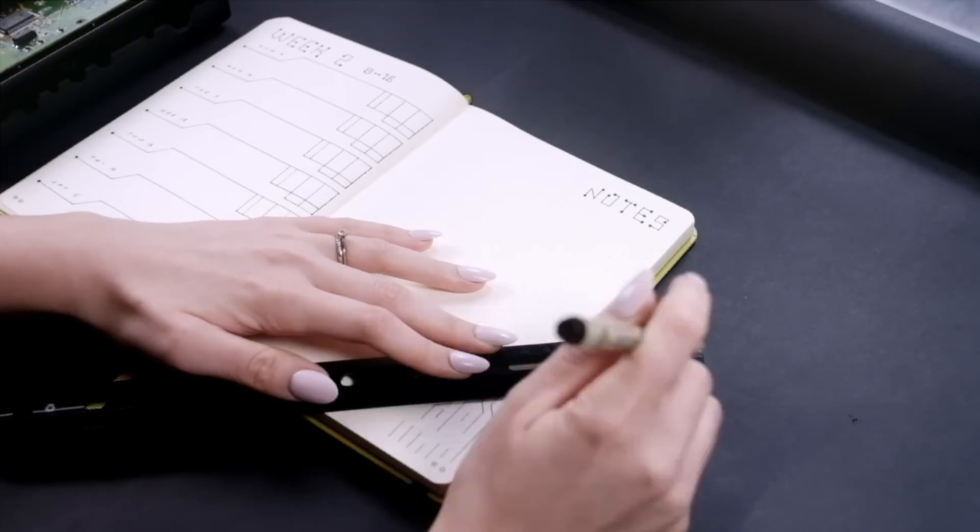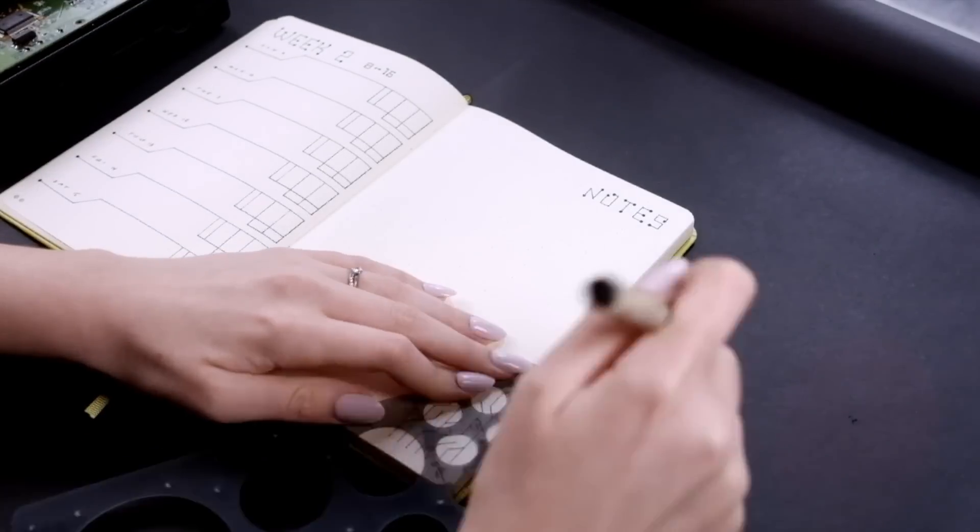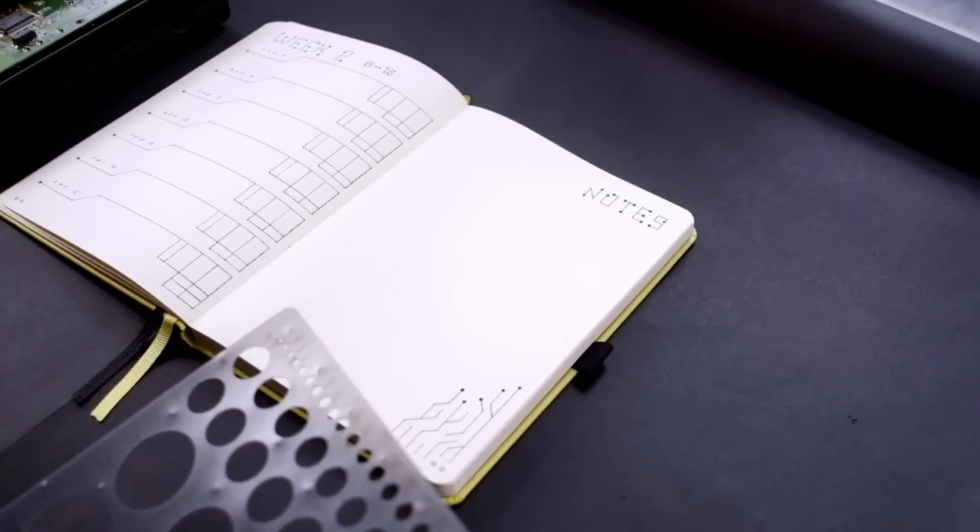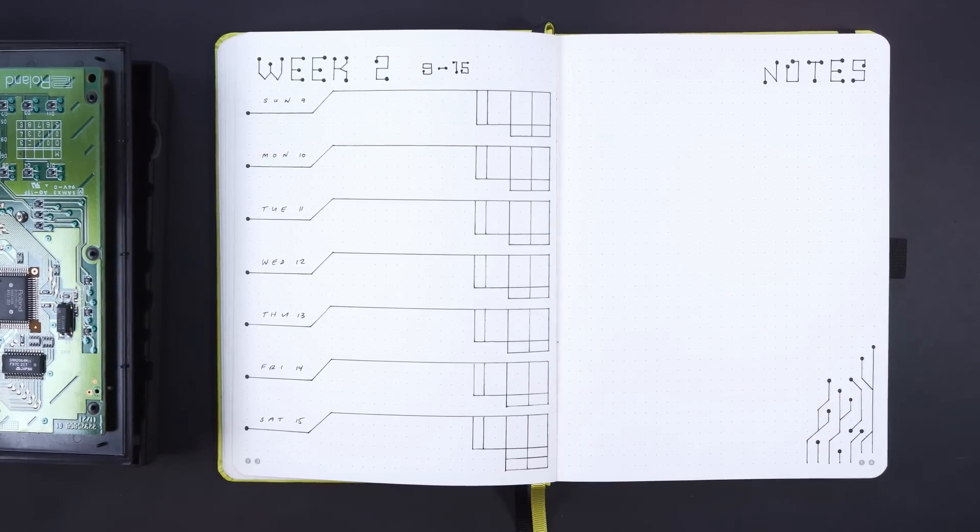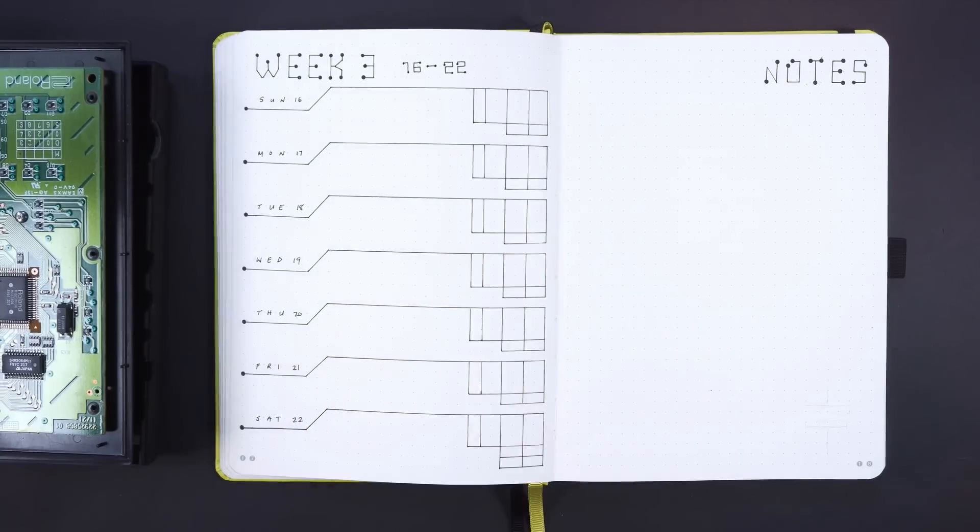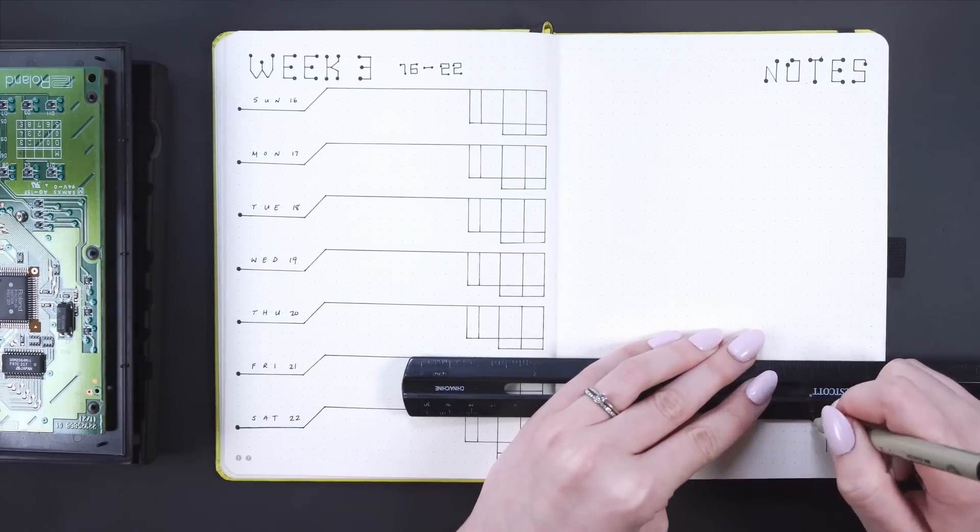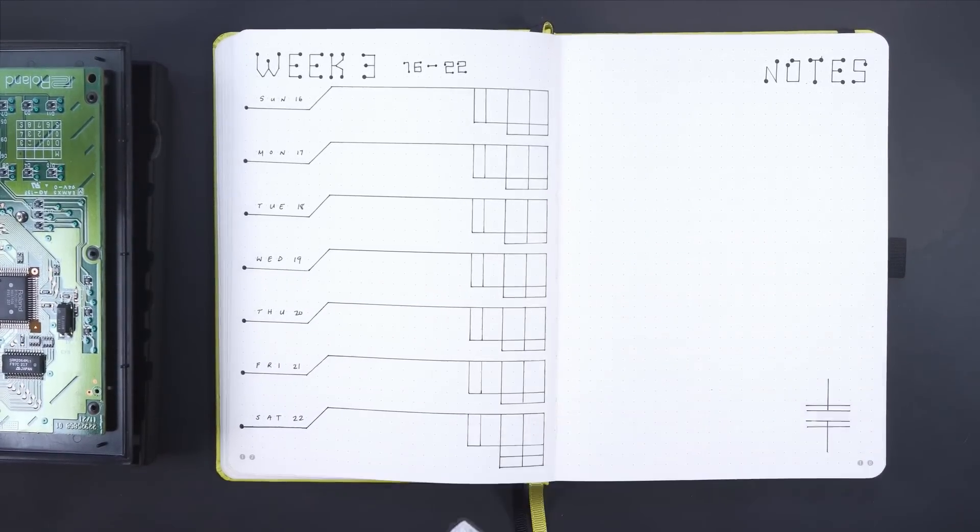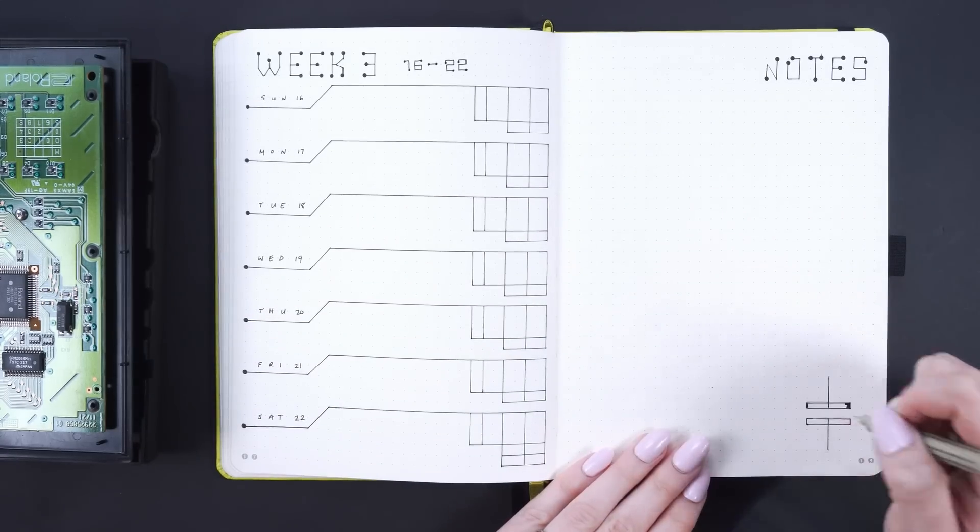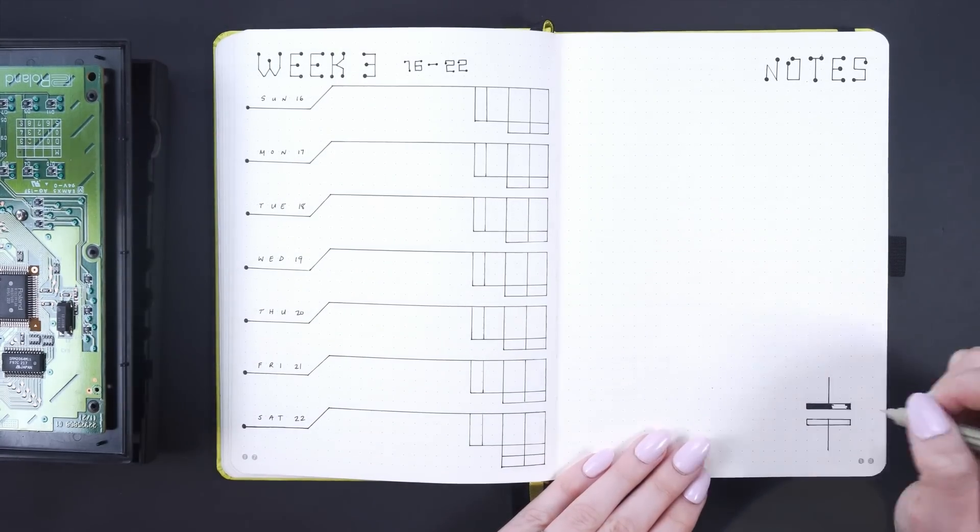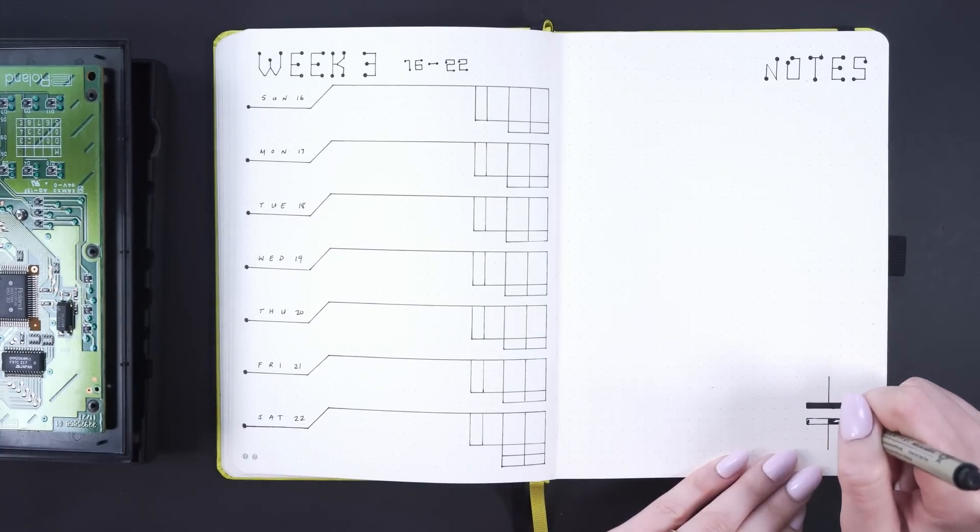On week two, I decided to do a relatively simple circuit pattern kind of tying in the type of circuit drawings that I did on the cover page and on the monthly. On week three, I drew the symbol for capacitor. Again, as some of you who have been here for a little while will know, my husband loves Back to the Future. He actually has a flux capacitor tattoo which I believe he showed back in his Back to the Future plan with me video which I can link if you want to check it out. So this is actually the symbol for a real capacitor. It doesn't look exactly like a flux capacitor, but considering a flux capacitor isn't a real thing, I think that's okay.